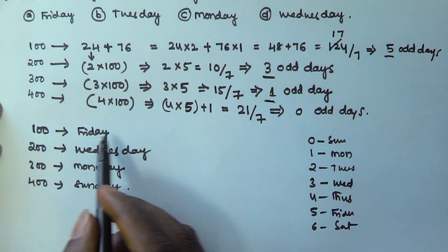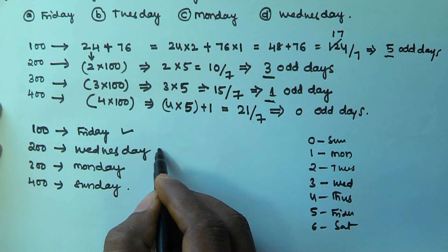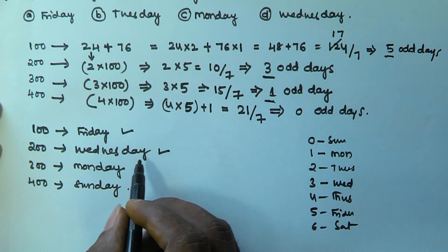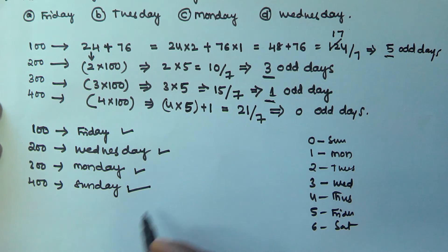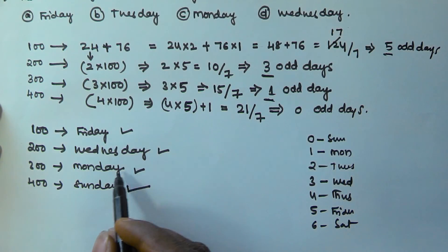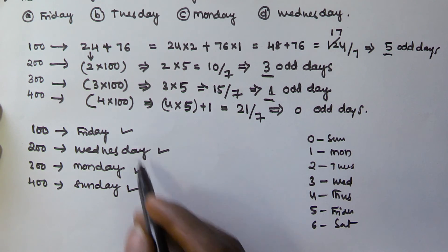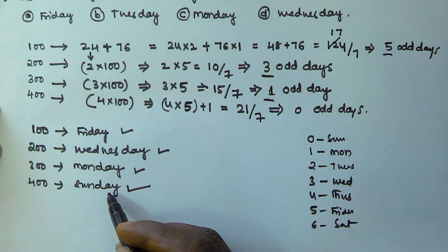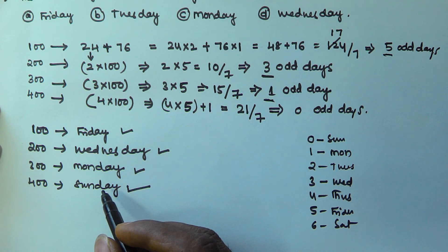So the last day of the 1st century is Friday, the 2nd century is Wednesday, the 3rd century is Monday, and the 4th century is Sunday. This cycle repeats. So Friday, Wednesday, Monday, and Sunday are the possible last days of centuries.